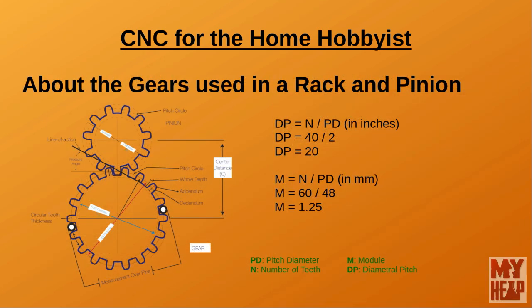Most rack and pinions available to home hobbyists are made with involute form, straight-toothed spur gears. Gears of this type are made in both imperial and metric sizes. Imperial gears are measured in diametral pitch and metric gears are measured in module, but in reality they measure the same thing. The module or diametral pitch of a gear is equal to the number of teeth per unit of pitch diameter.